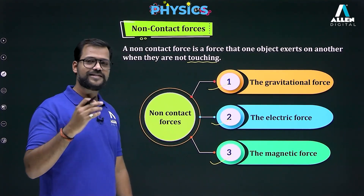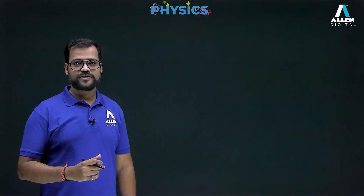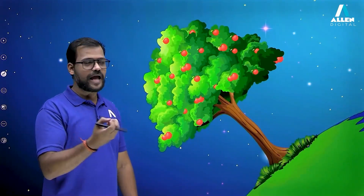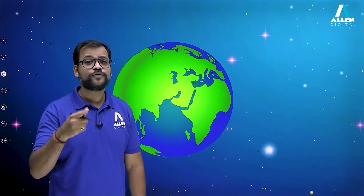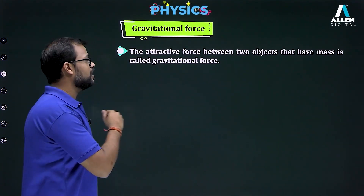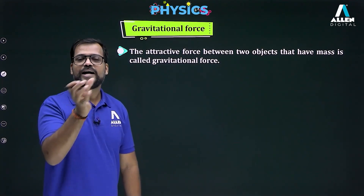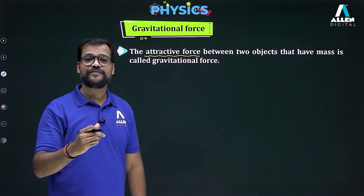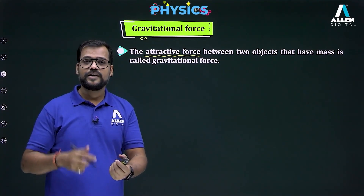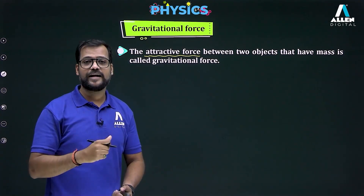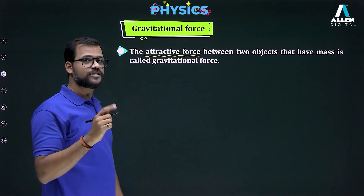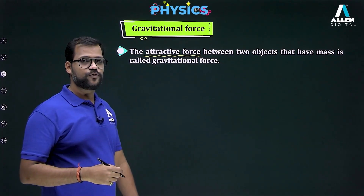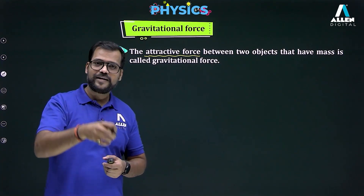All three kinds are non-contact forces. For example, on the earth's surface there is a tree with an apple, and that apple will fall down towards the earth's surface because of gravitational force. Gravitational force is always an attractive force — it is never repulsive. The definition: the attractive force between two objects that have mass is called gravitational force.